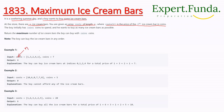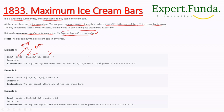The array length is n. The i-th position gives the price of that ice cream in coins — for example, a total of seven coins is given. The boy initially has some coins to spend and wants to buy as many ice cream bars as possible. Return the maximum number of ice cream bars the boy can buy with the coins.